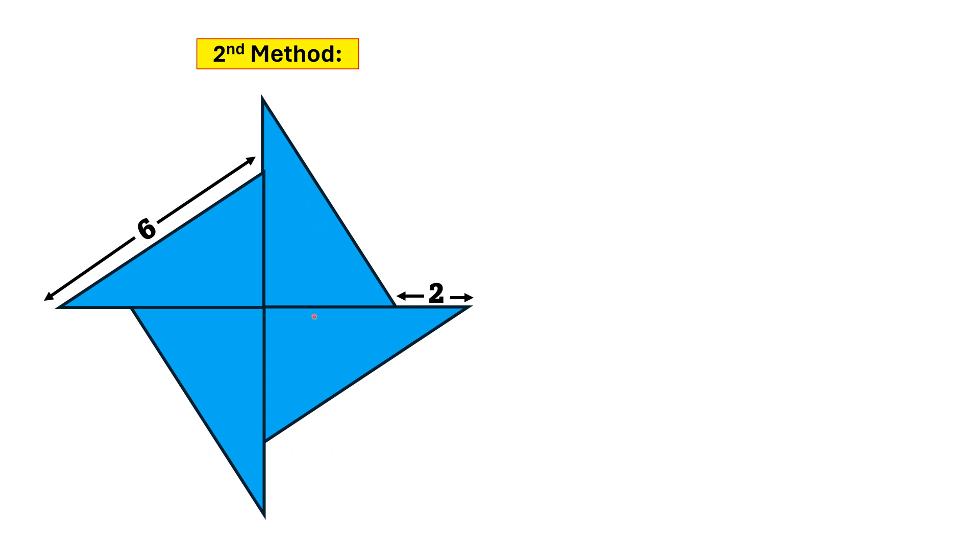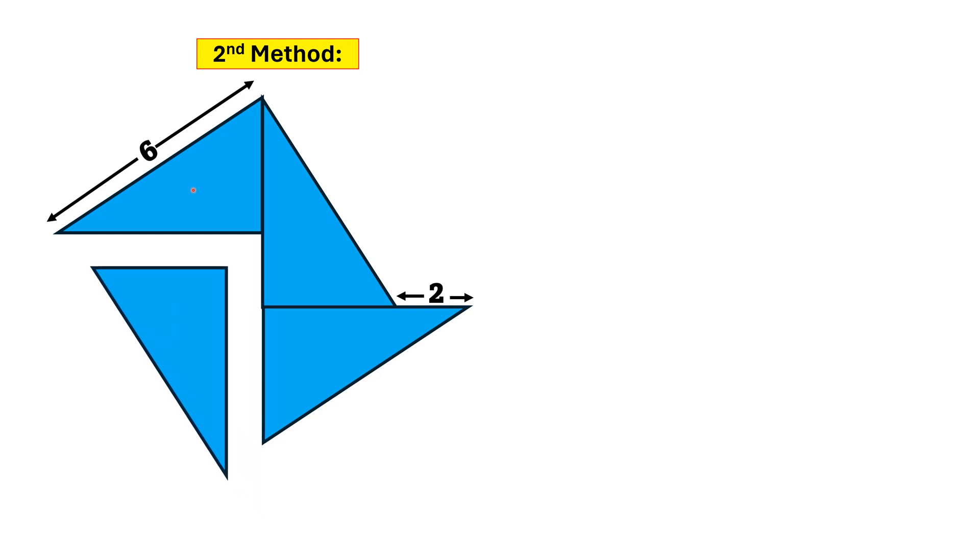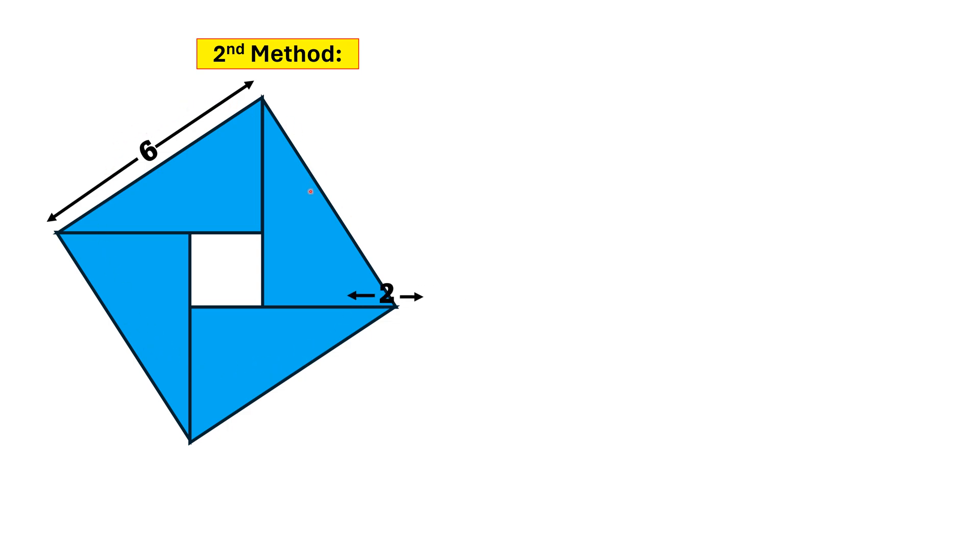In this method, we move the figure in such a way that it becomes a square. We move this right triangle in this way, and this right triangle in this way, and this right triangle in this way. It forms two squares: one is the larger square having side length 6, while the inside smaller square has side length 2.